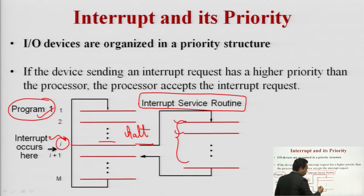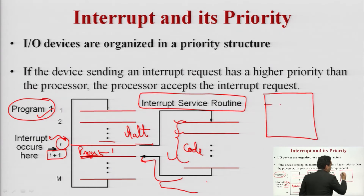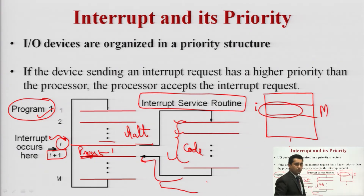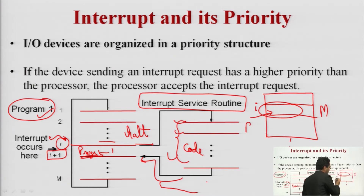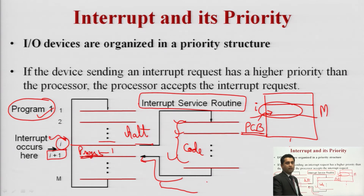Once the execution of the interrupt service routine is done, the arrow comes back to program one. In memory, the ith location is stored — the program which is in execution is halted when the interrupt is generated, and the state is saved. The PCB (process control block) stores the state; right now it is in waiting state. Once the interrupt is done, the same state is restored and execution resumes.